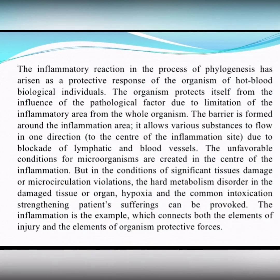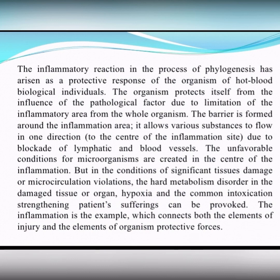What is the role of inflammation? The inflammatory reaction in the process of phylogenesis has arisen as a protective response of the organism. The organism protects itself from the influence of the pathological factor by limitation of the inflammatory area from the whole organism — a barrier is formed around the inflammation area. This allows various substances to flow in one direction due to blockage of lymphatic and blood vessels. Unfavorable conditions for microorganisms are created in the center of inflammation. But also in conditions of significant tissue damage or microcirculation violation, with metabolism disorder, hypoxia, common intoxication can be provoked. The inflammation is an example which connects both the elements of injury and the elements of organism-protective forces.